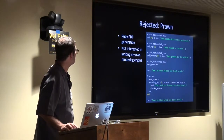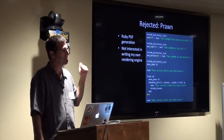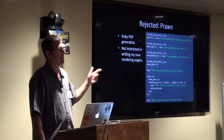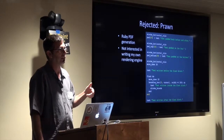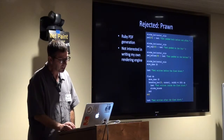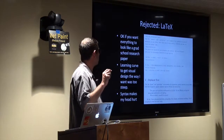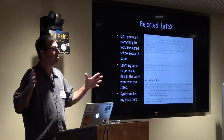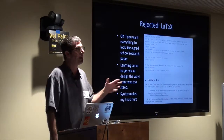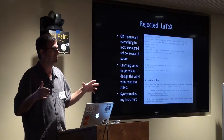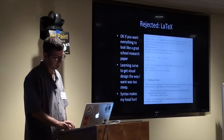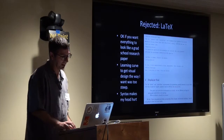So here are some of the approaches that I rejected. Prawn was the first thing I went with, because many years ago I needed to generate PDFs and I used Prawn. It works great for some things, but it's basically a very low-level library and I wasn't interested in writing my own rendering engine. I considered LaTeX — it's actually pretty good, and there are a lot of books done with it, but they're great if you want your book to look like your grad school research paper. If you want it to look like anything else, you're screwed, or you have a steep learning curve. And frankly, the syntax makes my head hurt.